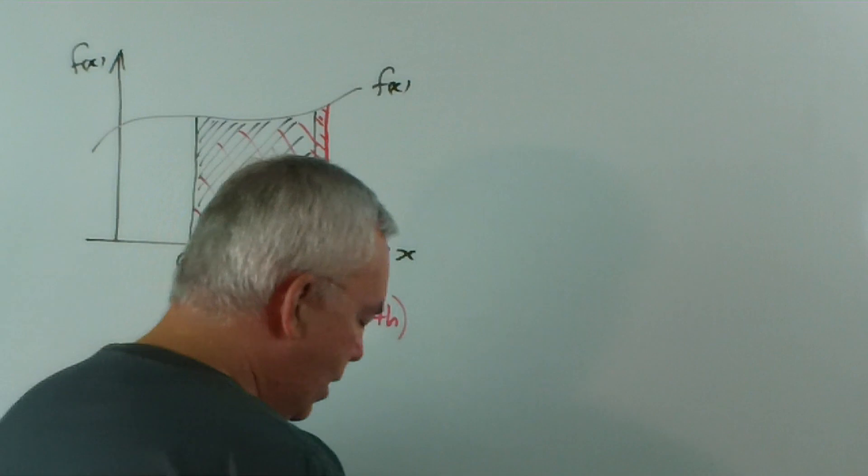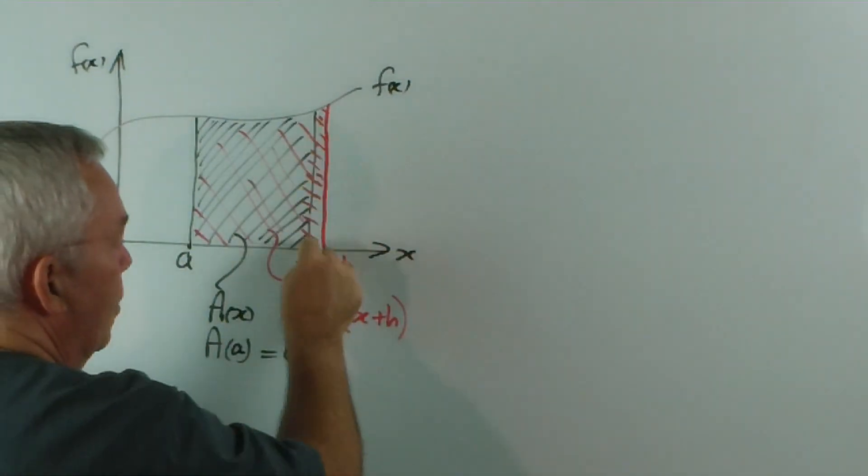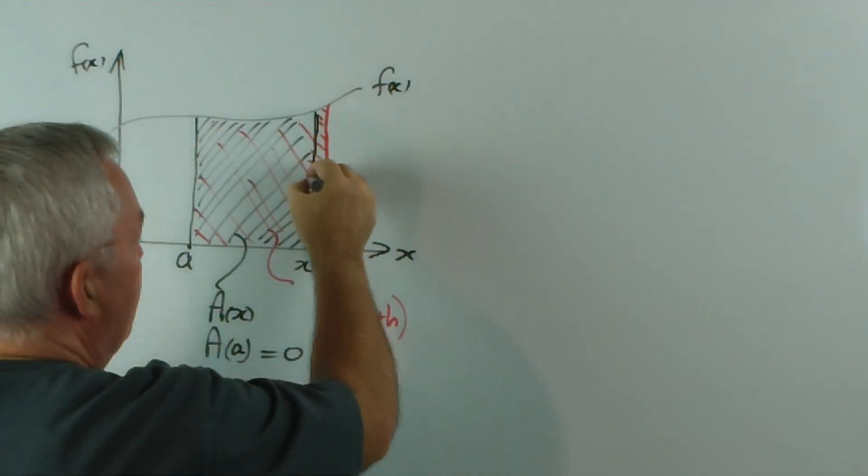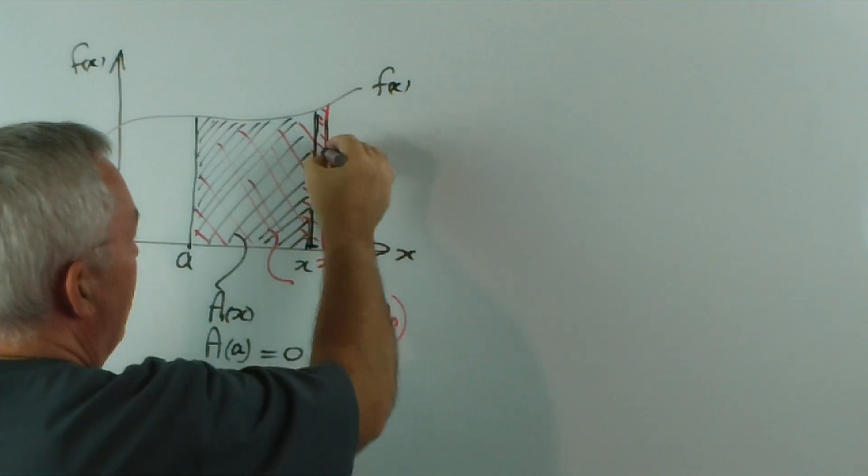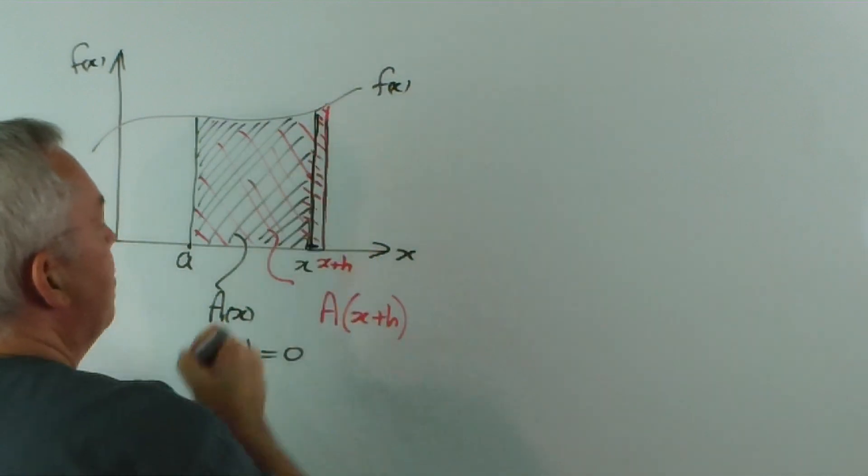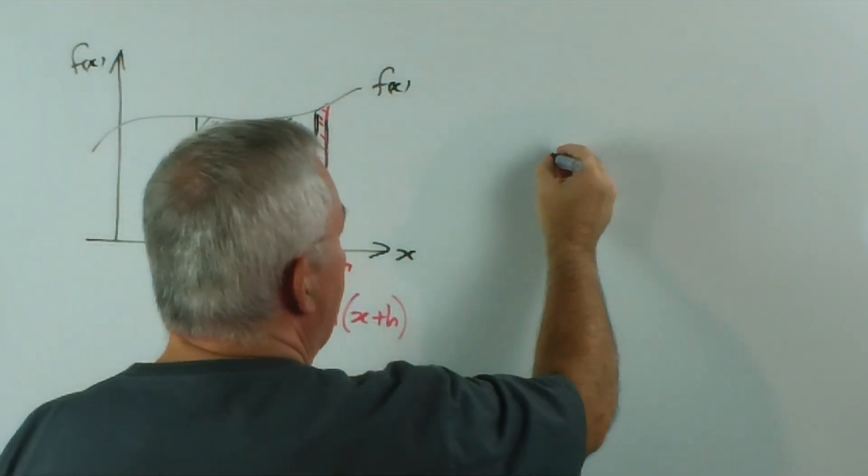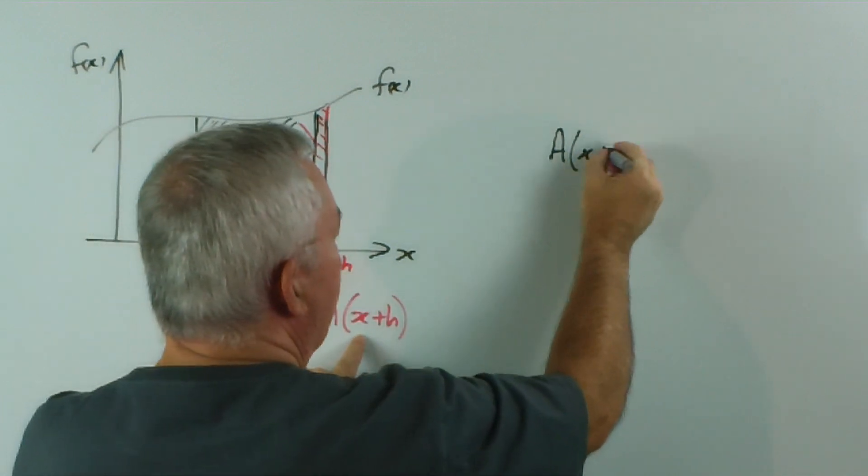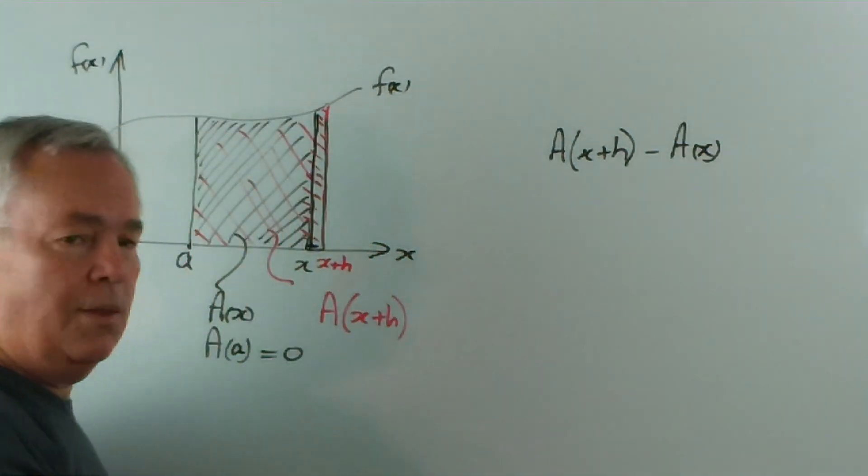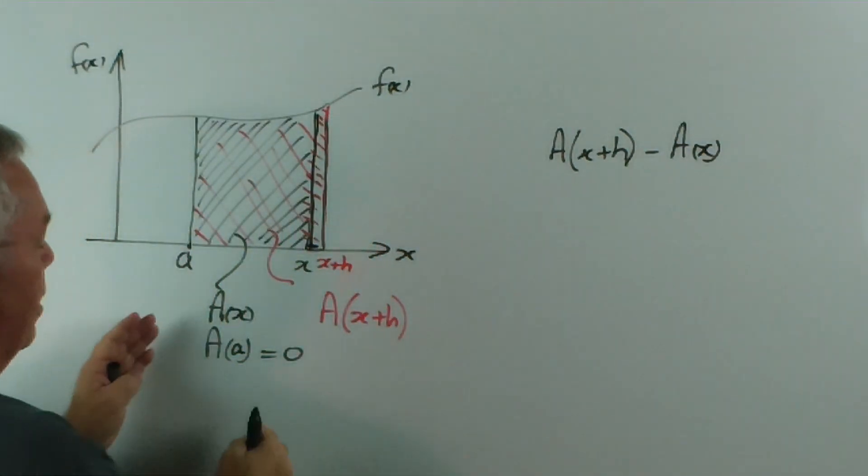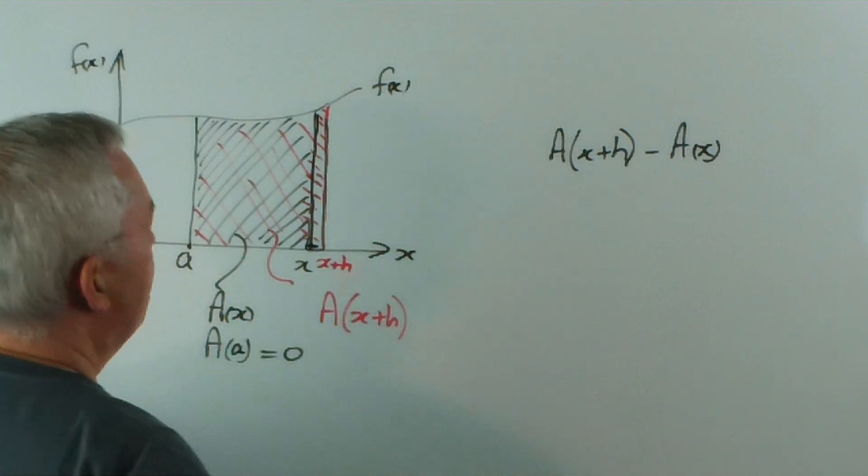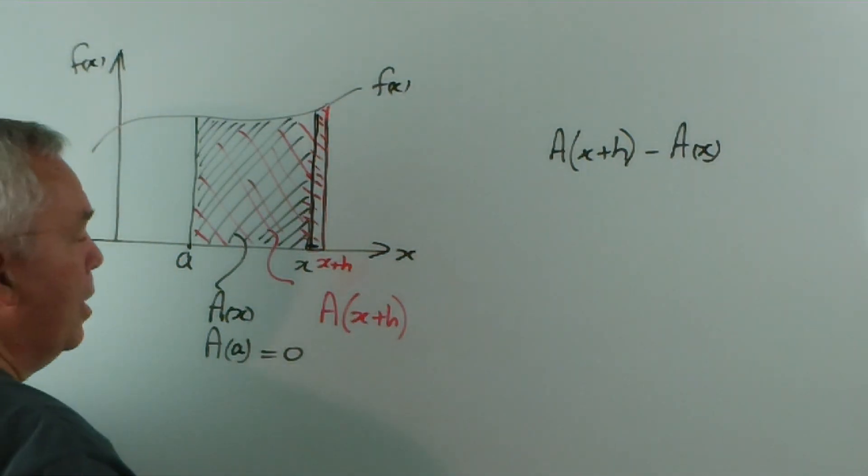So the question now arises: What can we say about this tiny little portion? Well, this little strip here above the x-axis between x and x plus h and below the curve is going to be this area minus that area. I think you can agree to that. So it's this larger red area subtract all that black area and we're just left with that strip. Now, what can we say about it?